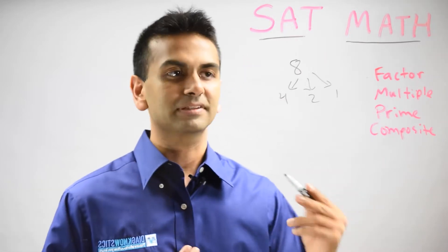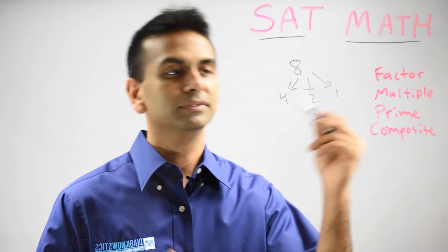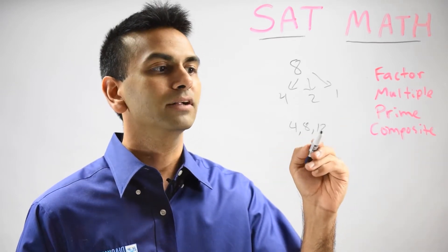Multiples—it's kind of like the opposite of that. 8 is a multiple of 4. 8 is a multiple of 2 and so on. So really, all the multiples of 4 are 4, 8, 12 and so on.